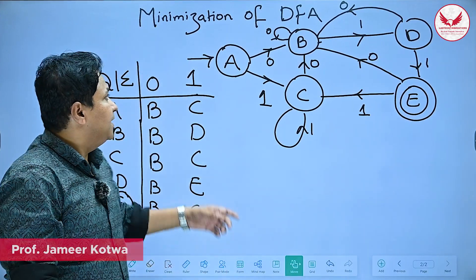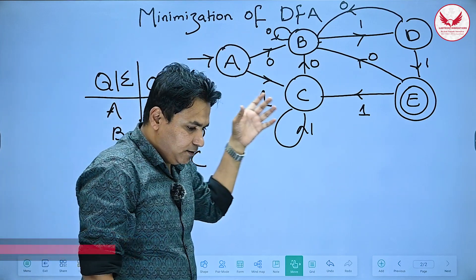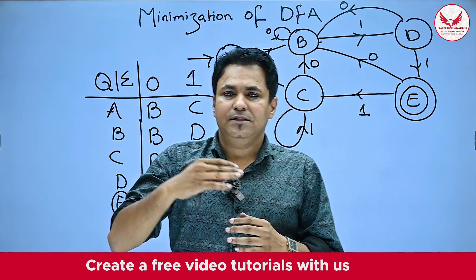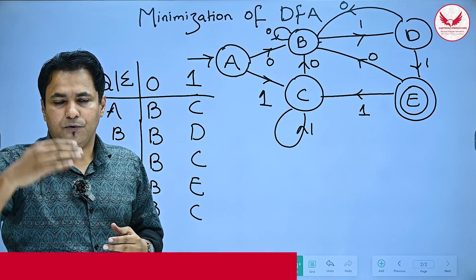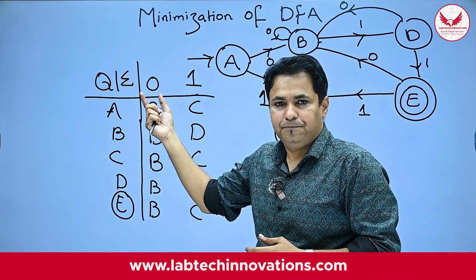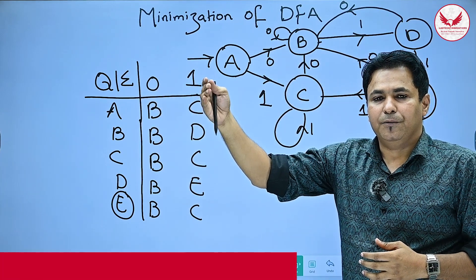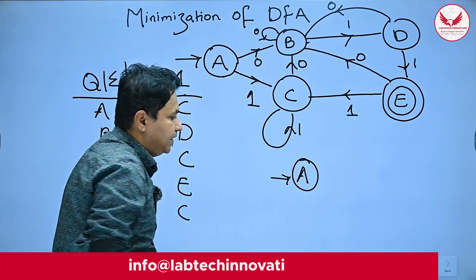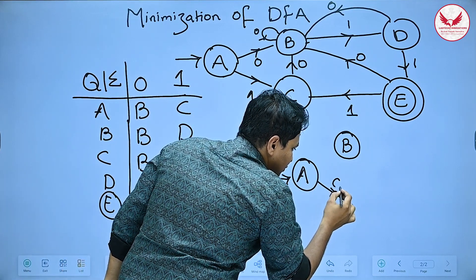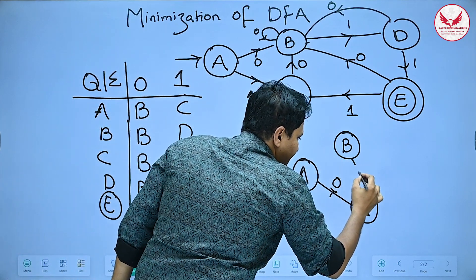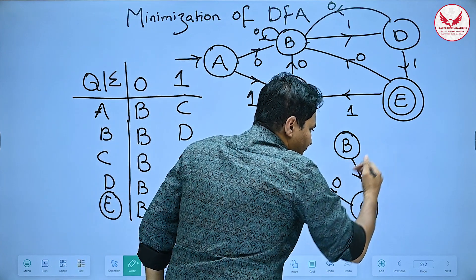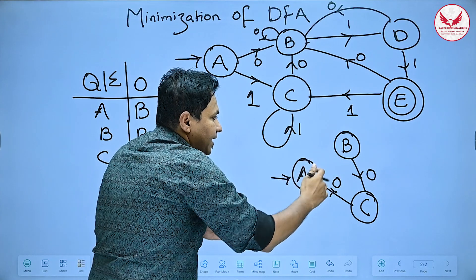The next topic is minimization of DFA. Looking at the transition diagram, we have states A, B, C, D, E — a total of five states. The goal is to reduce the number of states. For example, if state A and state B both process input 0 and reach the same state C, then we can merge A and B into one single state.